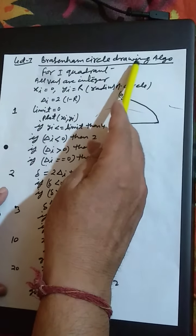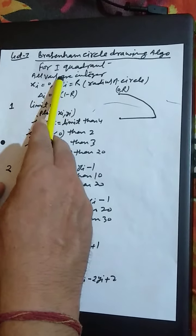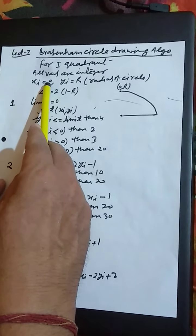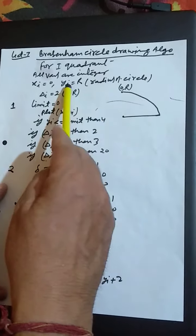Today's topic is Bresenham Circle Drawing Algorithm. For the first quadrant, all variables are integer. xi is equal to 0, yi is equal to r, and R is the radius of the circle.